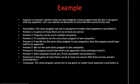Now let's reason from there. Premise one: in games of chess there can be at most one winner. This is from the rules of chess — there cannot be two winners. There can be stalemates, in which case there are no winners, but there cannot be two winners. Premise two: programs can be run in multiple computers — this is just true of programs in general. Premise three: it's possible to run the same chess program in two computers, that is, the chess program that the computer scientist has designed.